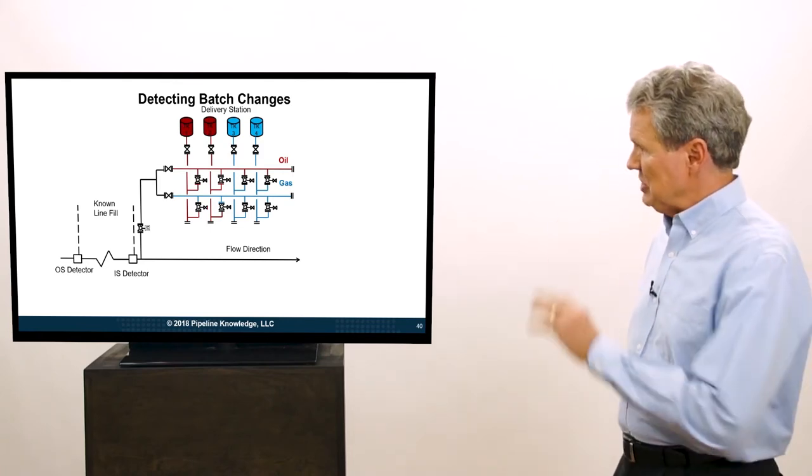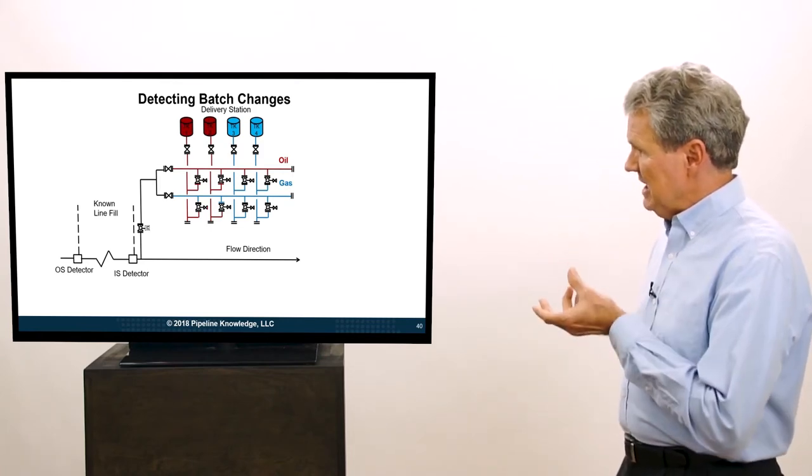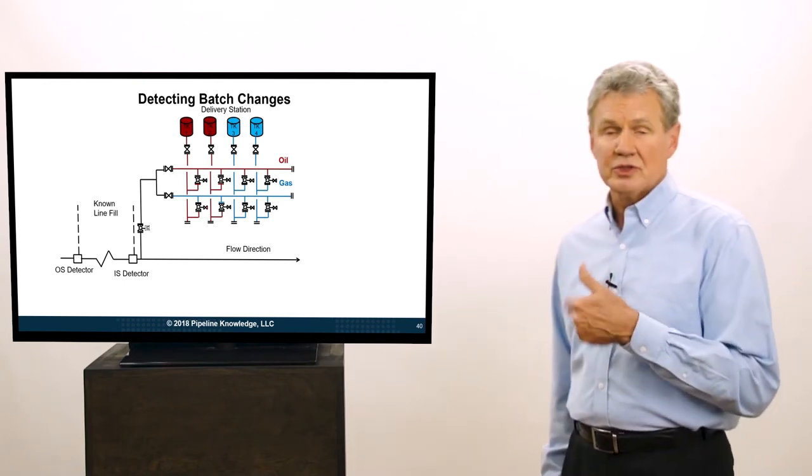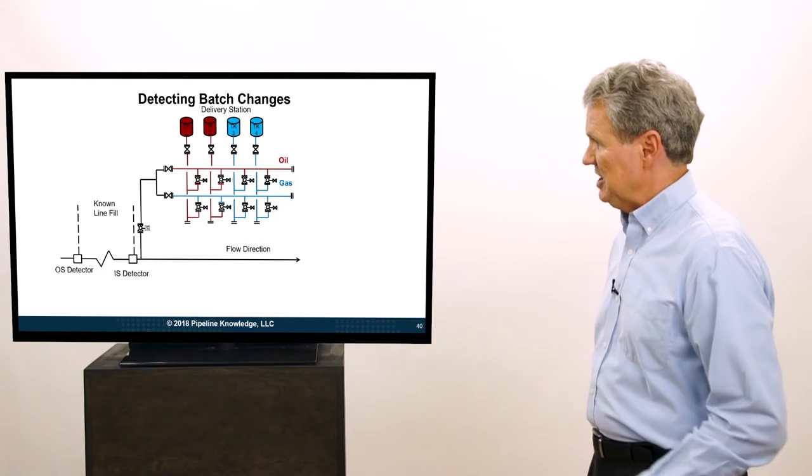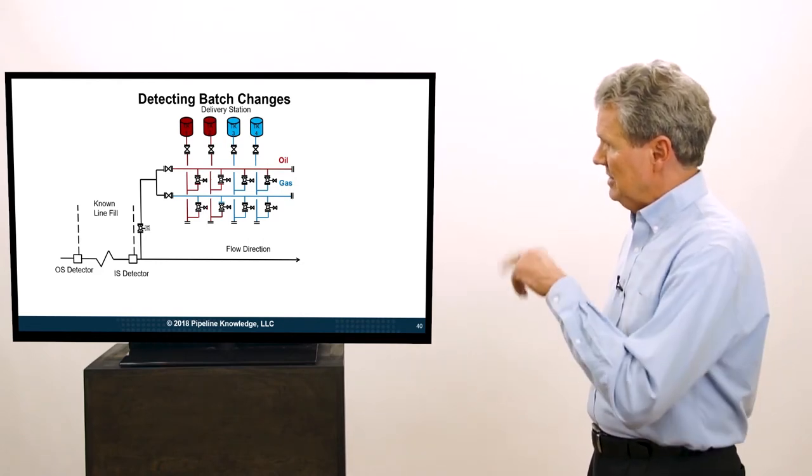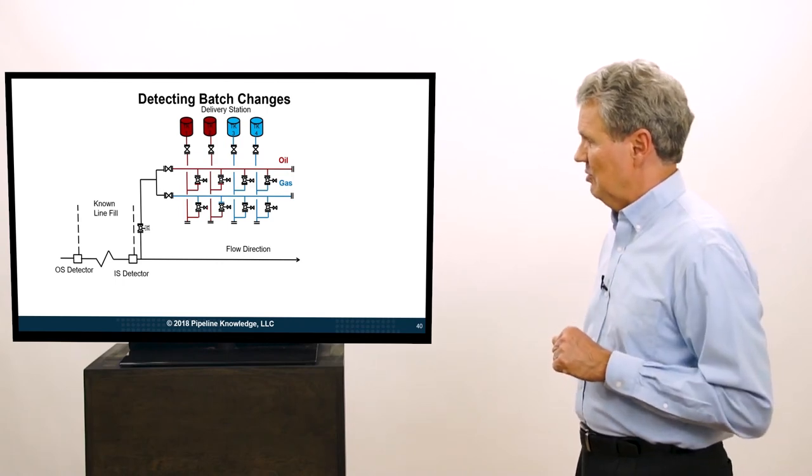I probably should have labeled this distillate and gasoline. But we've got this manifold built up so we can use any of these tanks with either of the headers. We can either use them in oil service or gasoline service depending on what we want. So in this case, we've got two that are in gasoline service. They're blue. And the two in distillate service, they are red.